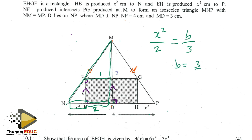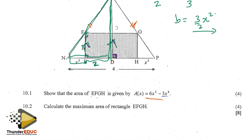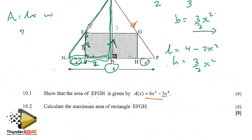I need to make b the subject, which gives b = 3/2 · x squared. Using this proportion — x squared over 2 equals b over 3 — I can now get my area. The length of the rectangle is going to be 4 minus 2x squared, and I already have my height as b = 3/2 · x squared. Area is length times width.